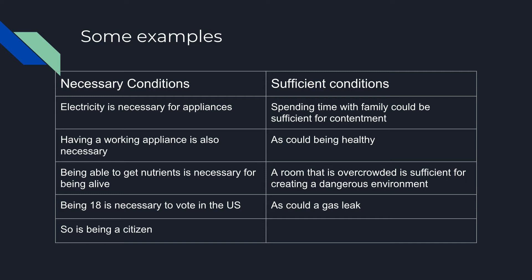Some examples of necessary conditions: you need electricity in order to run an appliance, and you need a working appliance in order to run an appliance. Being able to get nutrients is necessary for being alive — for everything we've known to be alive so far, it is necessary for those beings to get nutrients in order to continue to live. Another example from the book: you must be 18 in order to vote in the United States, and you must be a citizen. These are all necessary conditions — they have to be in place before the other thing can happen.